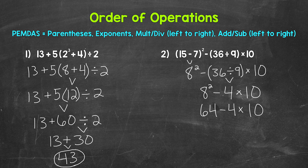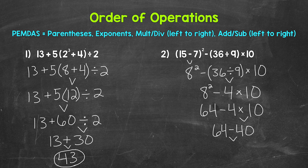Now we have 64 minus 4 times 10. Any parentheses? No. Any exponents? No. Any multiplication or division? Yes, we have 4 times 10, so we need to do that next. 4 times 10 is 40. Bring down everything we did not use. So we have 64 minus 40. We're only left with subtraction, so this is what we end with. 64 minus 40 is 24. And that is our final answer.